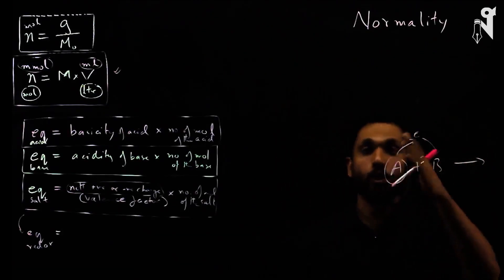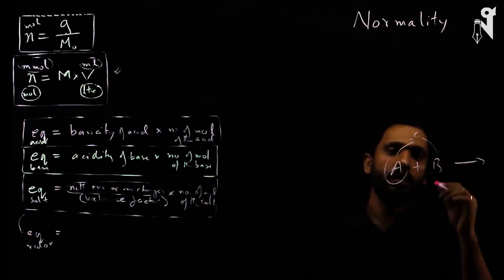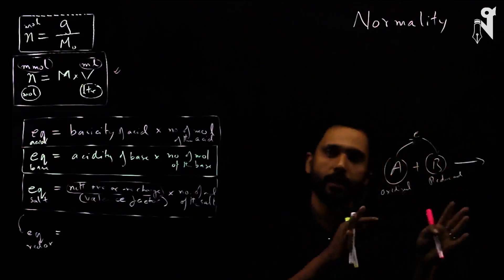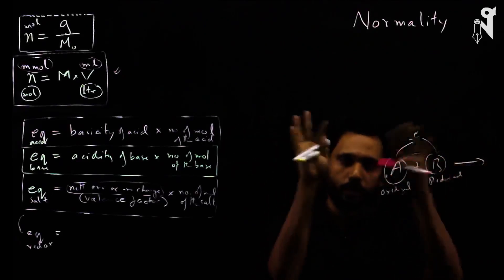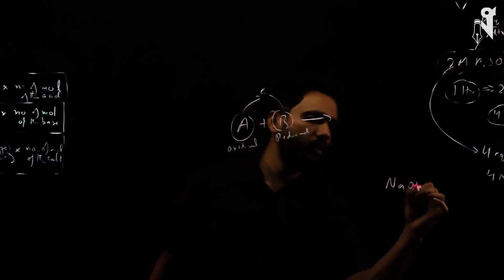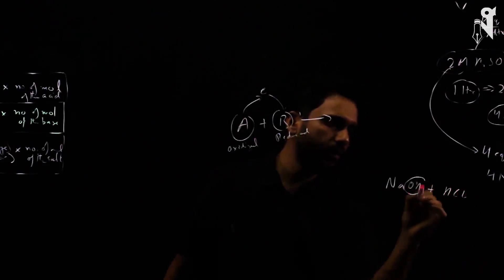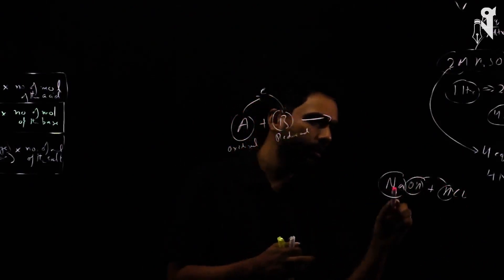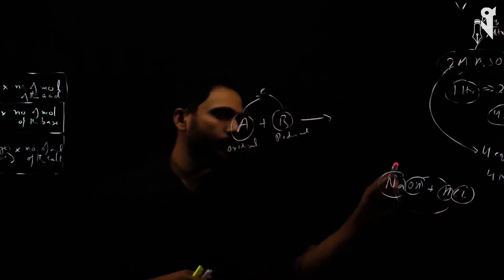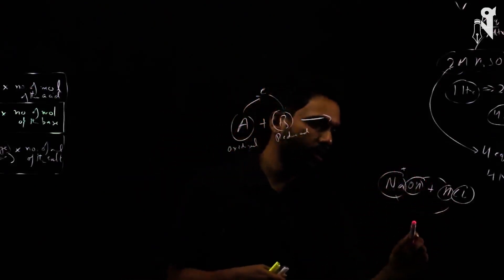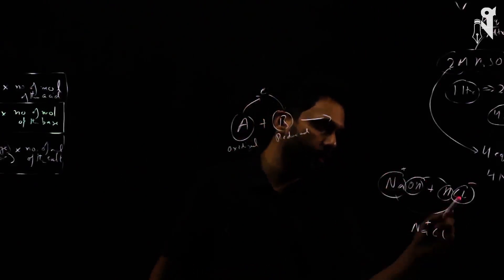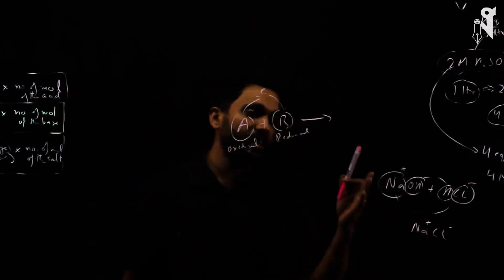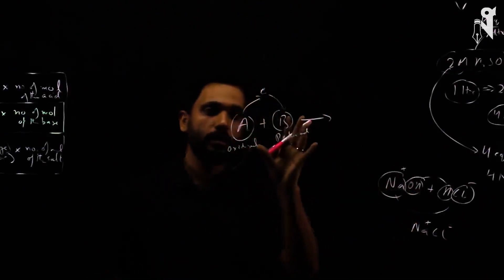The molecule that loses electrons is oxidized; the one that gains electrons is reduced — that's your redox reaction. This was not happening in double displacement reactions — there, it was just an exchange of ions. For example, NaOH with HCl: OH⁻ combines with H⁺ to form water, and Na⁺ combines with Cl⁻ to form NaCl. The valency of Na stays +1 and Cl stays -1, so oxidation state does not change.